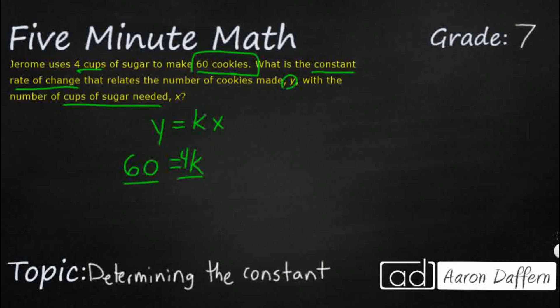And so we know that if we want to figure this out, we'll just divide both sides by 4. Right? We'll get that. And that's going to be k is going to be 60 divided by 4, which is 15.